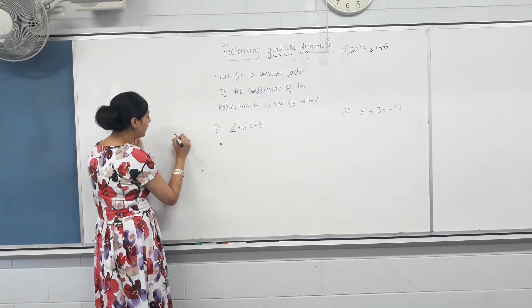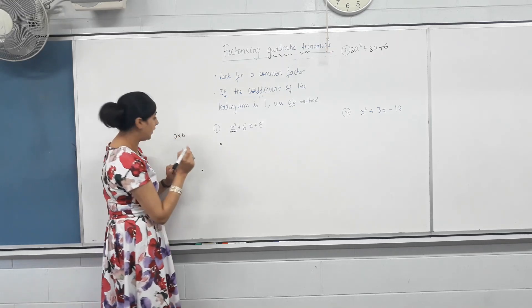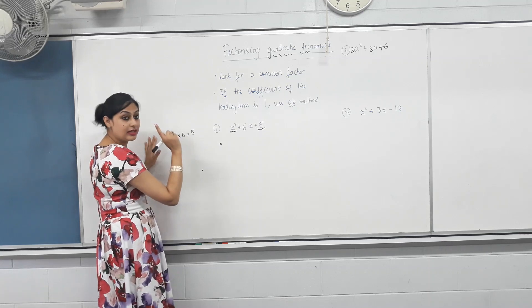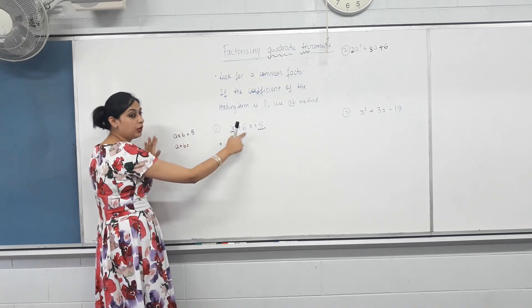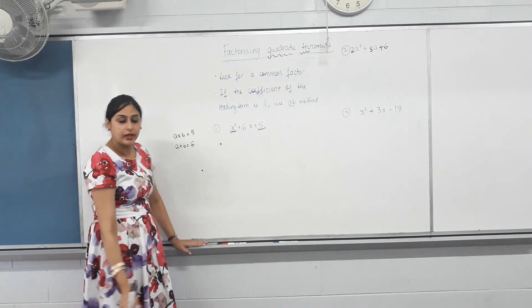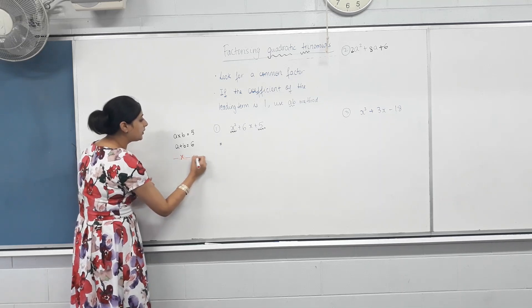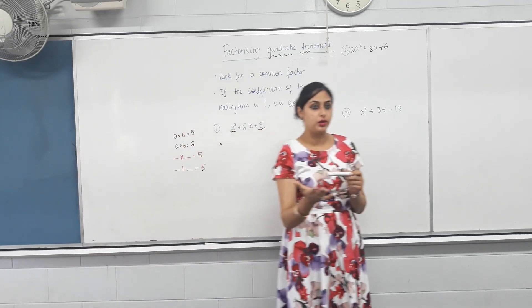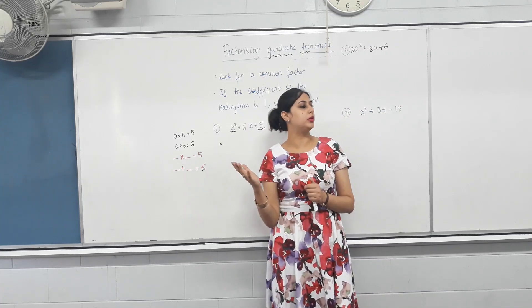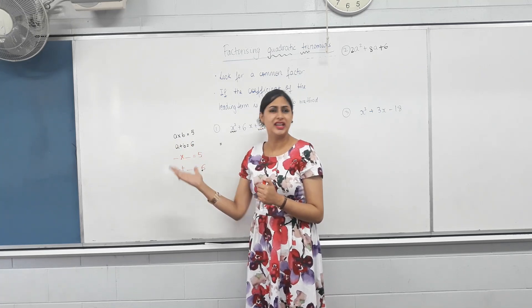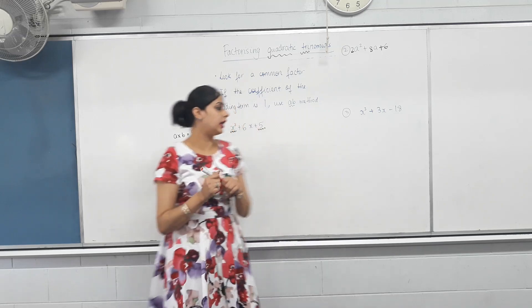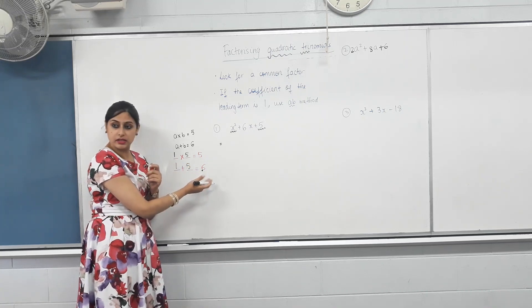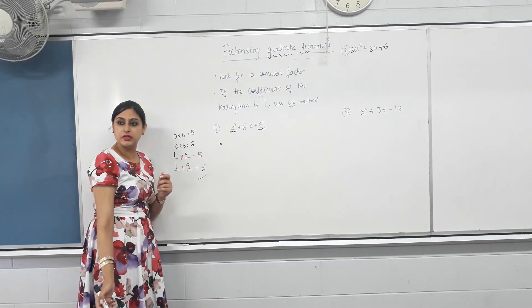What is AB method? We need to find two numbers, A and B, such that when you times them together, you get your last term. What's the last term? Five. And the same two numbers, A and B, when added together, give you your middle term, which is positive six in this case. I want you to draw this template every time you do this question. What are the possible ways I can get five? One times five. One plus five — does that give us six? Yes. That means one and five are our numbers.